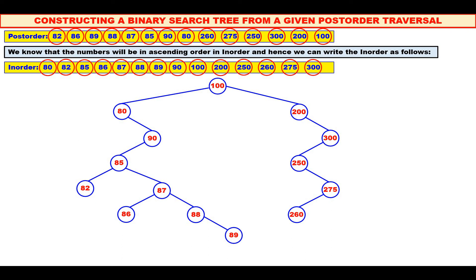Very easy — constructing a binary tree whenever post-order and inorder traversal are given. Alternatively, see the post-order and inorder, and by careful observation you should be able to construct the binary tree quite easily, quite simply, no problem at all.